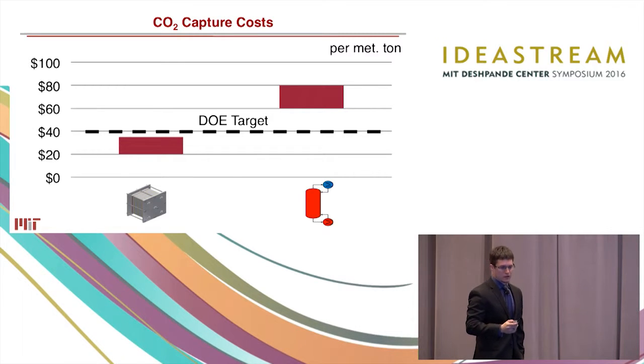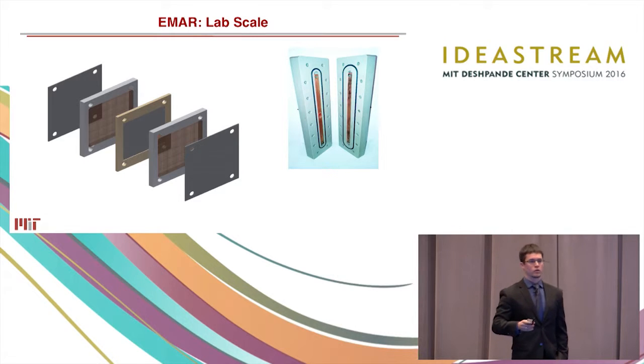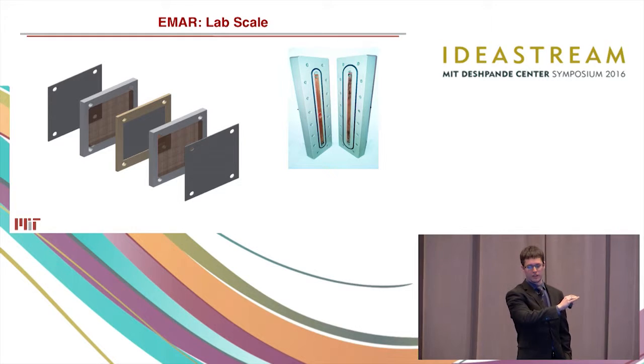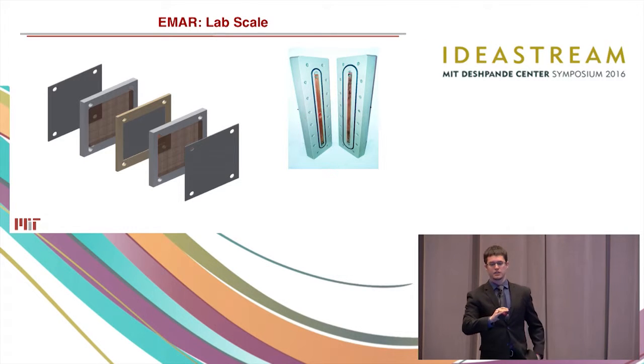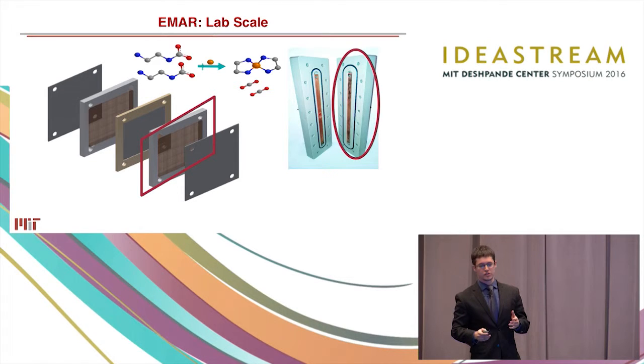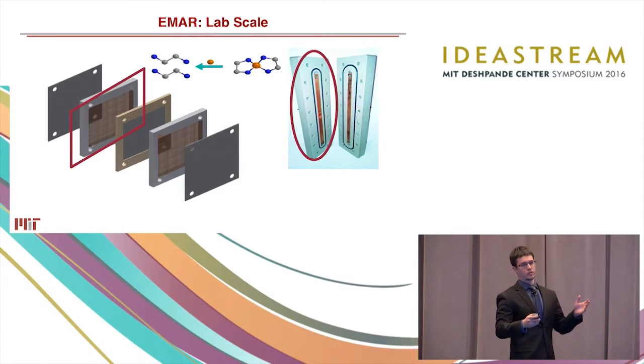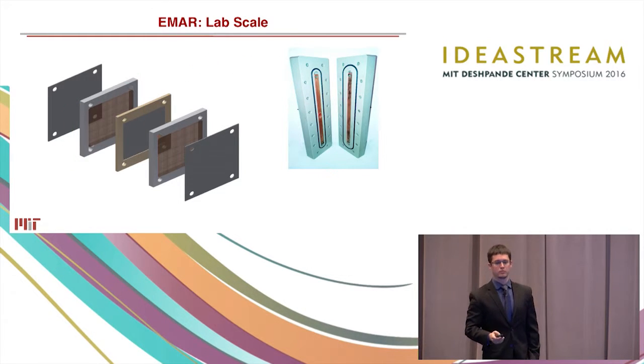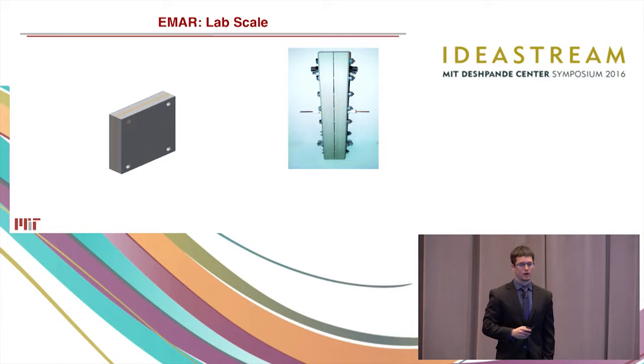So we've demonstrated in the Hatton lab that this works on a lab scale. And I'm showing right here an idealized version of the EMAR system on the left, and one of a number of generations of EMAR cells that we've actually built in the lab on the right. It works like this. On one side we have an electrode, the anode, where the CO2 is released, and on the other side, the cathode, we have another electrode where we pull out the copper. Between the two goes a membrane.